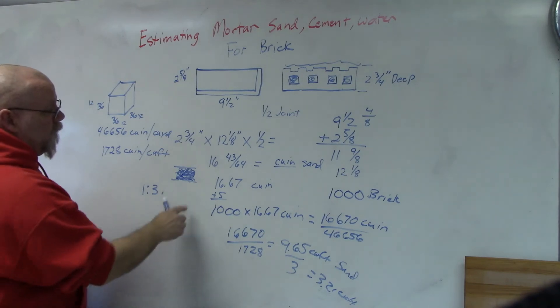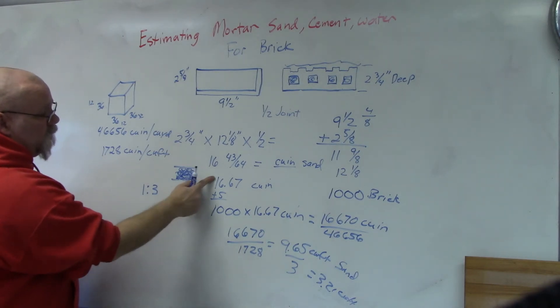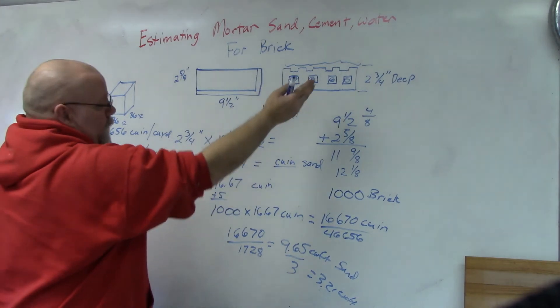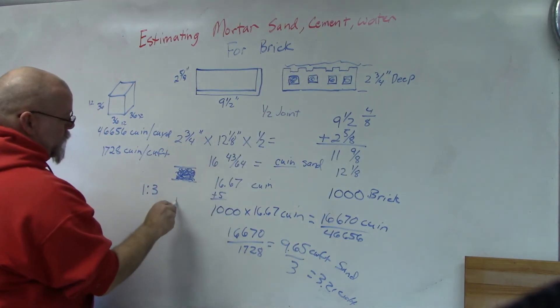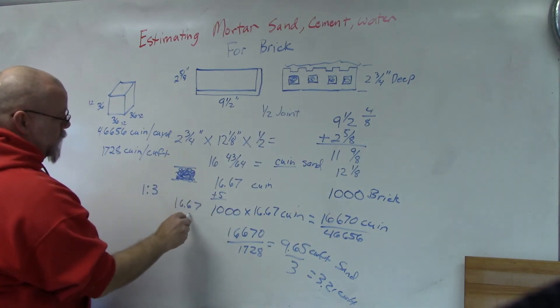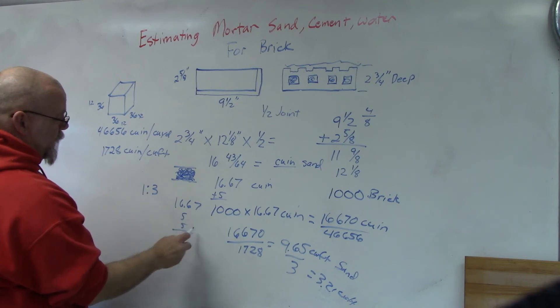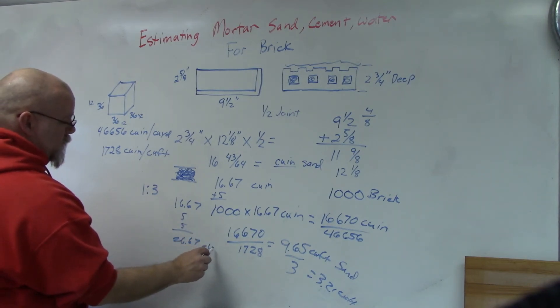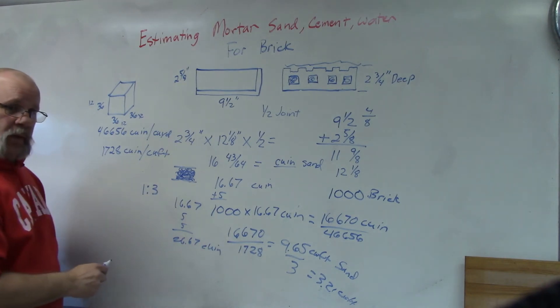Okay, so you could add here at the beginning. So you got 16.67 for the joint, you got five for the holes, and maybe add another five. So you get 16.67 plus five plus five, so now you're at 26.67 cubic inches per brick.